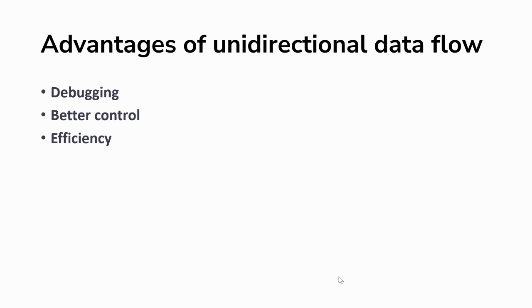The second advantage is better control. Having data flow in one direction makes the program less prone to errors and gives the developer more control of the program.